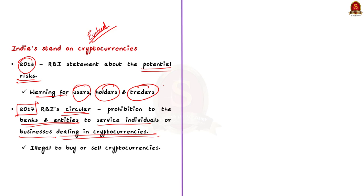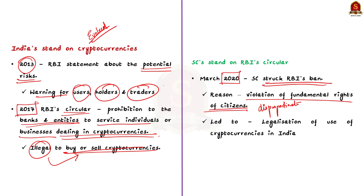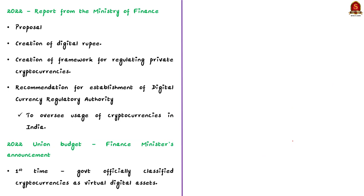However, in March 2020, the Supreme Court of India overturned the RBI's ban on cryptocurrencies, stating that the ban was disproportionate and violated the fundamental rights of citizens. This decision effectively legalized the use of cryptocurrencies in India and opened a door for their wider adoption. After the Supreme Court judgment, the Indian government considered a regulatory framework for cryptocurrencies. In 2022, the Ministry of Finance released a report proposing the creation of a digital rupee — a state-backed cryptocurrency — and a framework for regulating private cryptocurrencies.